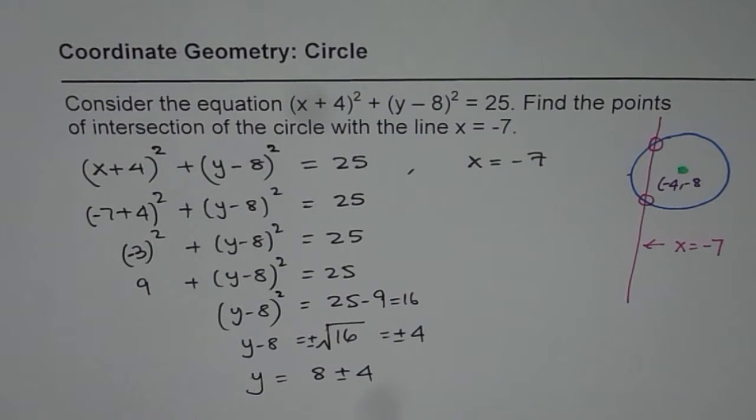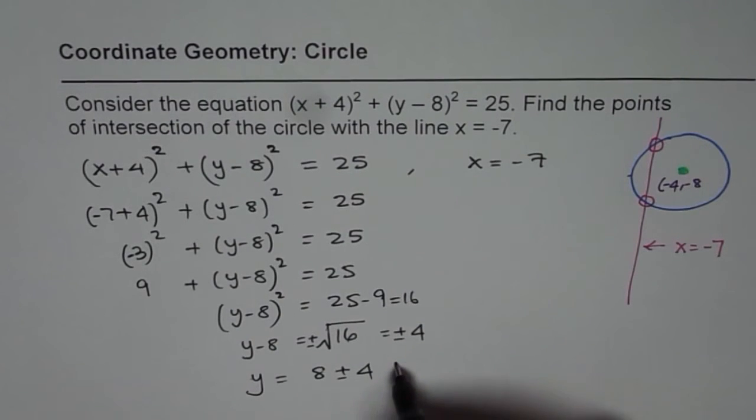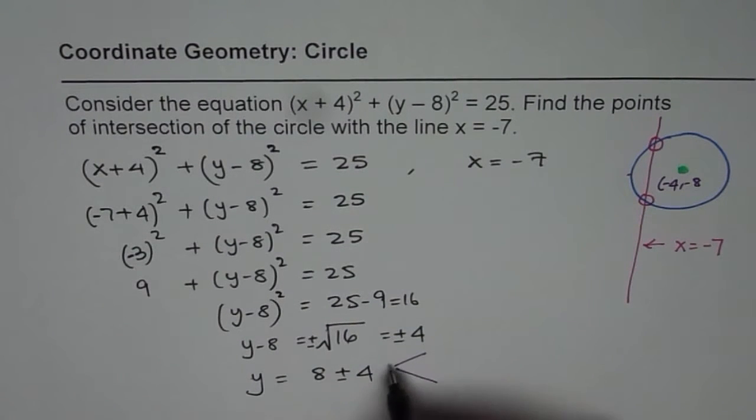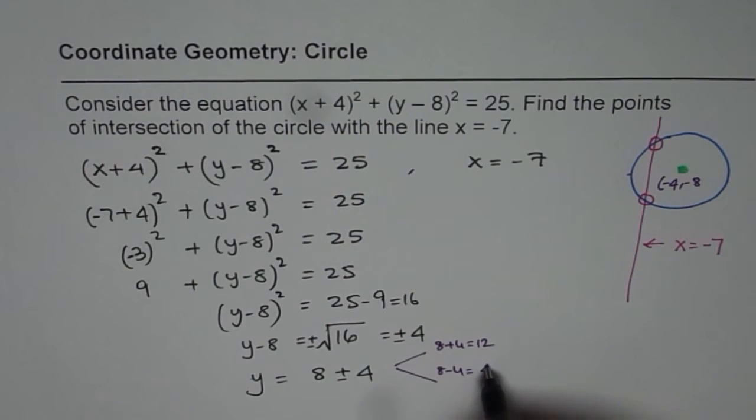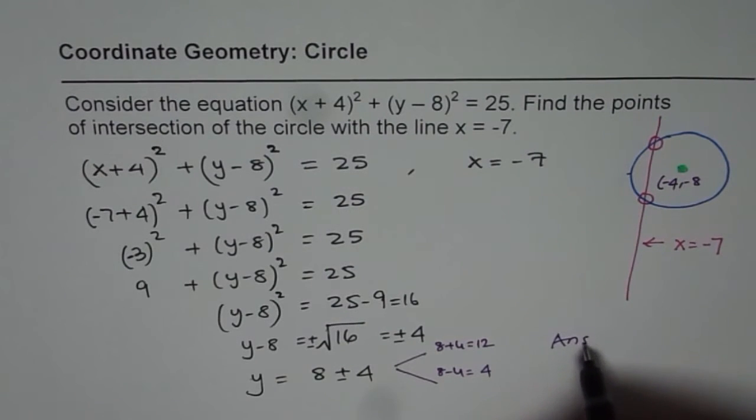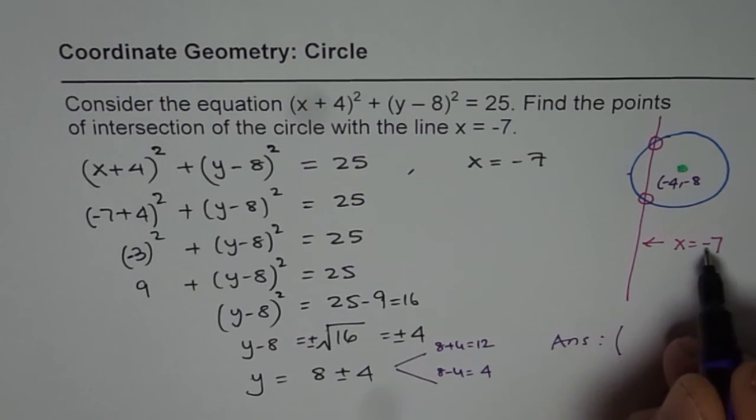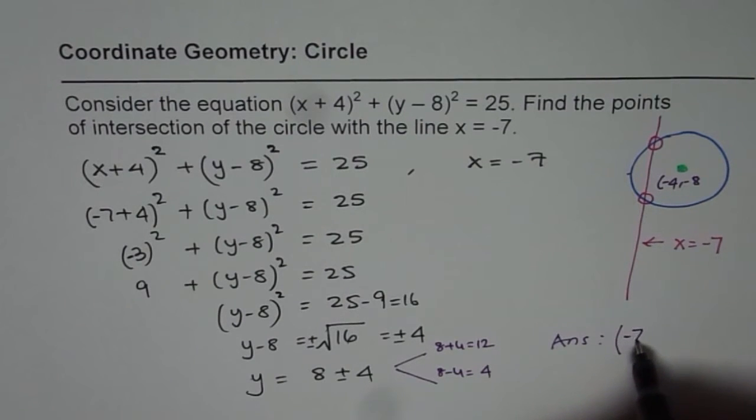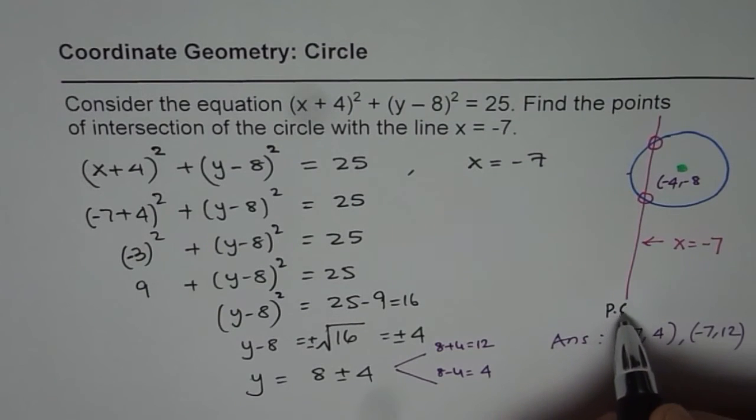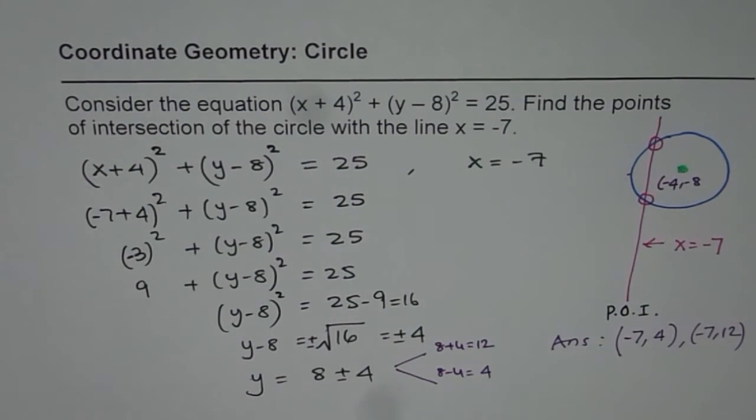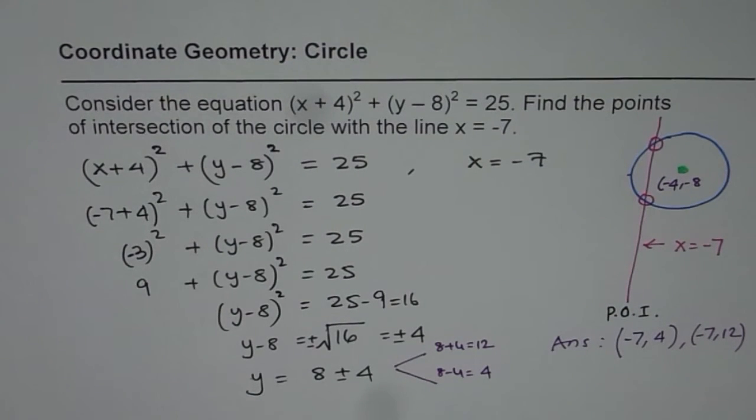As expected, we get 2 points. One is 8 + 4 = 12, and 8 - 4 = 4. So the 2 points are: x = -7 with y = 4 or 12. The points of intersection are (-7, 4) and (-7, 12). That is how the question should be solved.